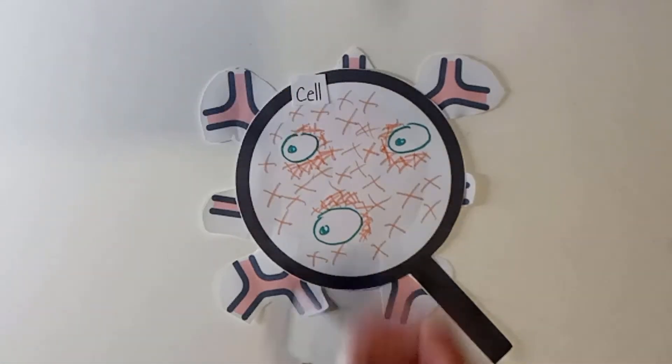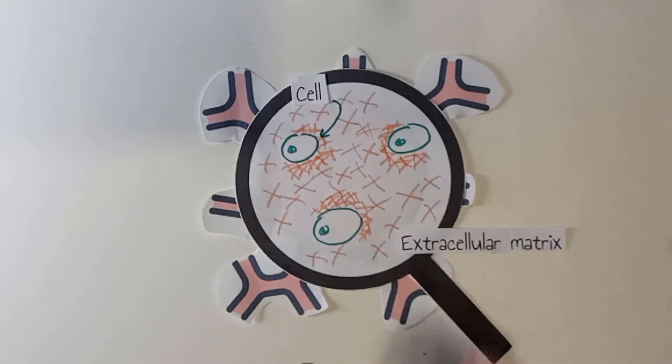Now let's zoom in. Tumors are made out of cells, here in green, but also out of an extracellular matrix, here in pink.